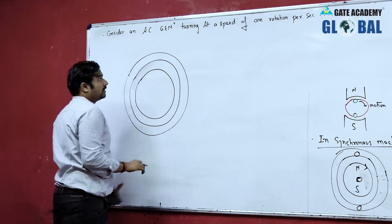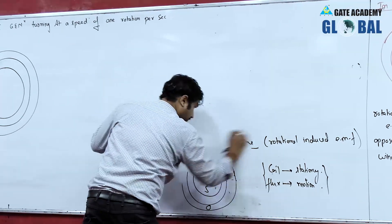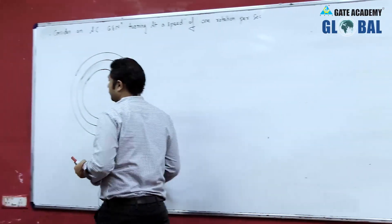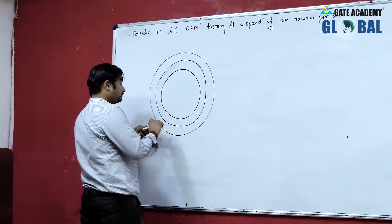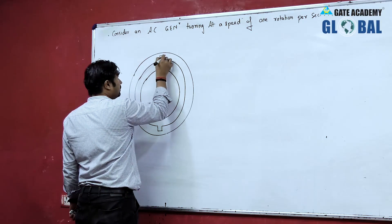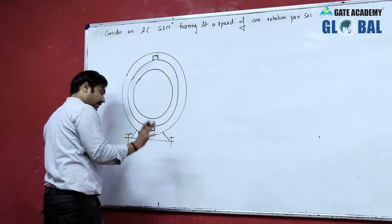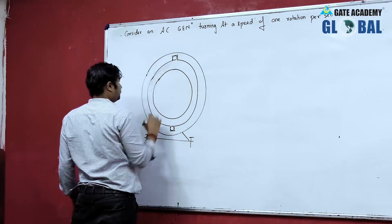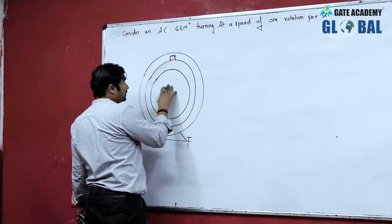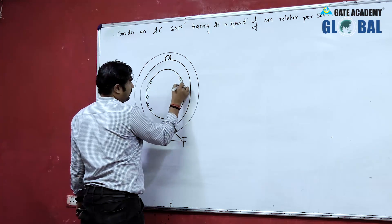The generated voltage can be expressed as a function of rotation. Here we have stator conductors and the stator is stationary — it is fixed. So the stator cannot rotate. We have a rotor which is provided with DC current, and because of this there will be pole formation on the rotor.